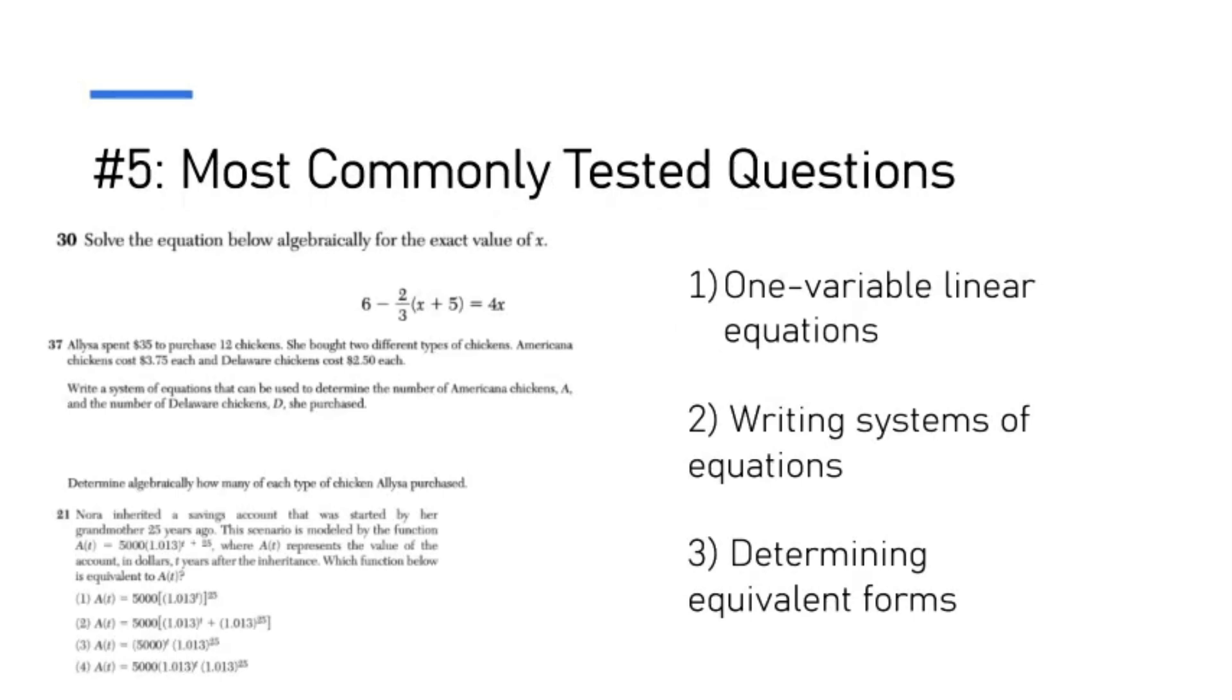The last thing we're going to cover is the most commonly tested questions, and they are also my predictions for this year's Algebra 1 Regents, so you're definitely going to see these questions on the test. A question on one-variable linear equations, a question asking you to write systems of equations, and another question determining equivalent forms. This one's 99% guaranteed on a multiple choice question.